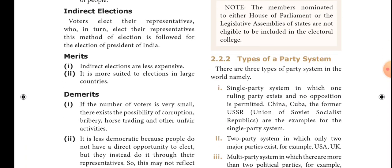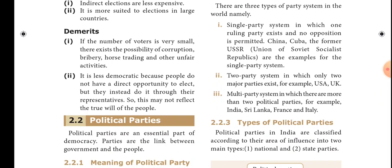The types of party systems in India: presently we follow the multi-party system, but there are three types of party systems in the world — single party, two-party or bi-party system, and multi-party system. In the single party system, one ruling party exists and no opposing party is permitted; examples are China, Cuba, and the former USSR. In the bi-party system only two major parties exist, for example UK and USA. In the multi-party system there are more than two political parties; examples include India, Sri Lanka, France, and Italy.